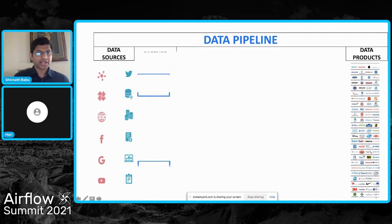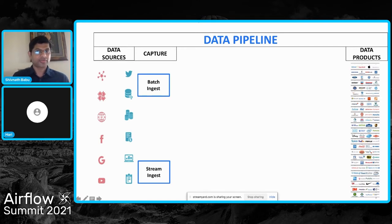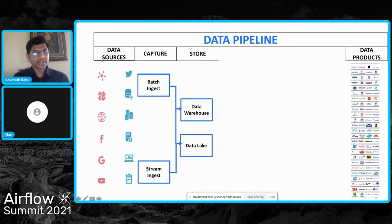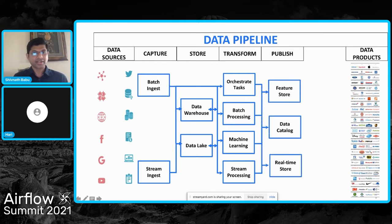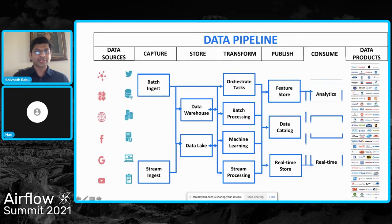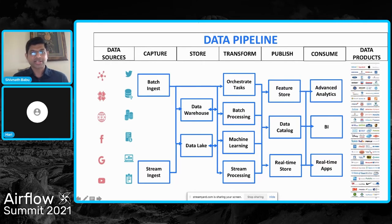A typical data pipeline has a phase where data is being captured, a lot of the time continuously. The data gets stored into distributed storage systems like a data lake or a data warehouse. A lot of computation happens on the data to transform it into key insights that you might want to extract. These insights, as well as any features you're extracting from the data, would be published and made available to all the consumers. This is how these really innovative data products actually work, and this entire process is what we would call a data pipeline.